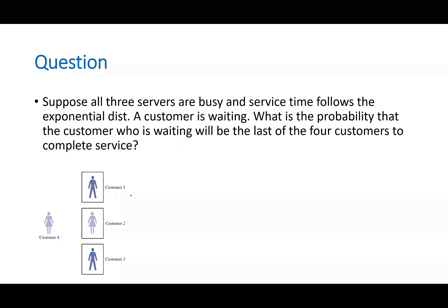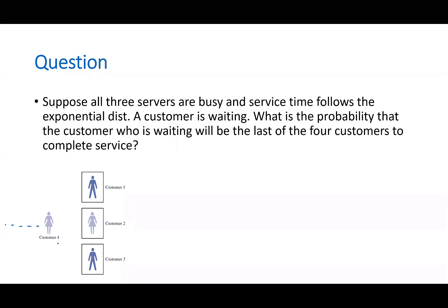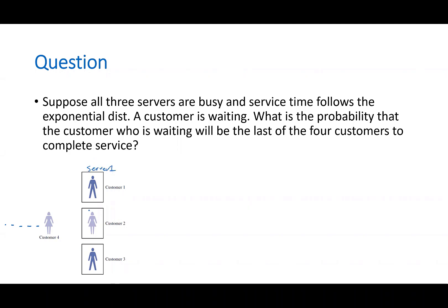Now here's a very interesting question. Suppose all three servers are busy and people are waiting in line. Customer number four is waiting in line while customers one, two, and three are being served — one customer per server. This is in a bank setting. All three servers are busy and service time follows an exponential distribution. What is the probability that the waiting customer — customer four — will be the last of the four customers to complete service?